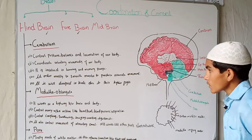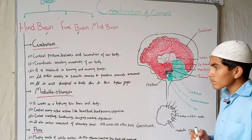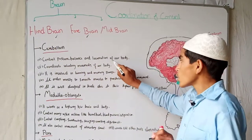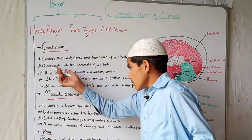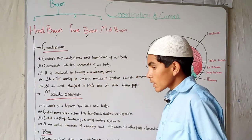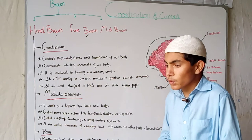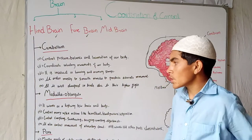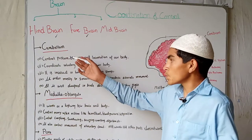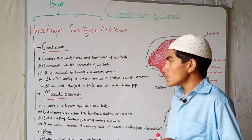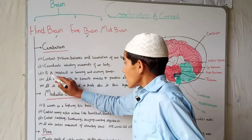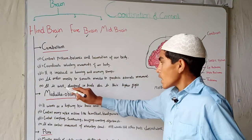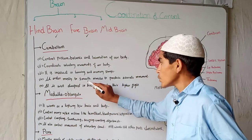The cerebellum controls posture, balance, and locomotion of our body. Second, it coordinates voluntary movement — for example, when we walk fast we don't fall to the left or right side; we go straight. This balance is controlled by the cerebellum. It is also involved in learning and memory.